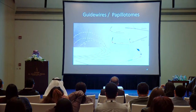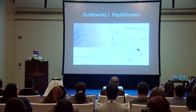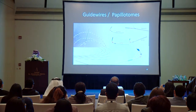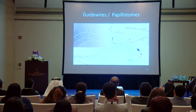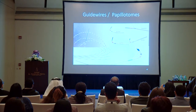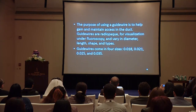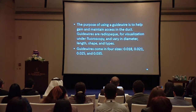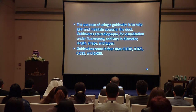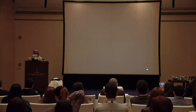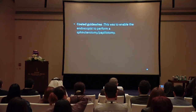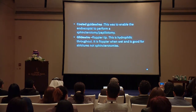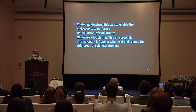There are many guide wires available on the market, and based on physician preference and hospital availability, you select accordingly. The purpose of using a guide wire is to help gain and maintain access to the bile duct. Guide wires are radiopaque, visualized under fluoroscopy, and come in varying diameter, length, shape, and type — in four sizes: 0.018, 0.021, 0.025, and 0.035. The coated guide wire enables the endoscopist to perform sphincterotomy. The glide wire has a floppy hydrophilic tip — it is slippery when wet and good for strictures, not sphincterotomy.